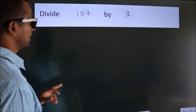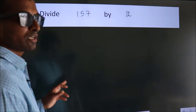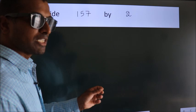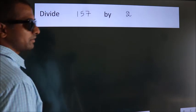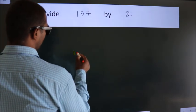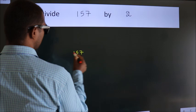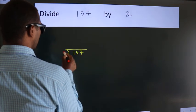Divide 157 by 2. To do this division, we should frame it in this way. 157 here, 2 here.